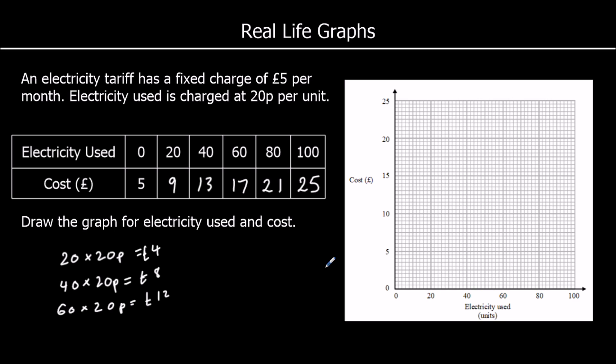Let's draw the graph. So 0 electricity is £5. 20 units for £9. So every 2 small squares is £1 here. So £9 is 2 back from £10. 40 units is £13. 60 units is £17. 80 is £21. And 100 is £25. So we'll join this up, it's a straight line. And there is our graph.